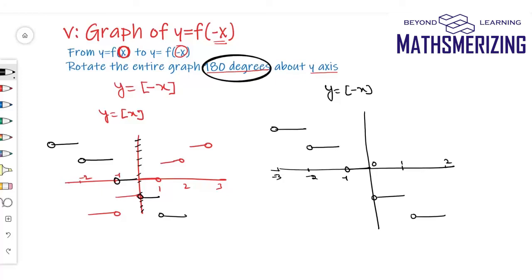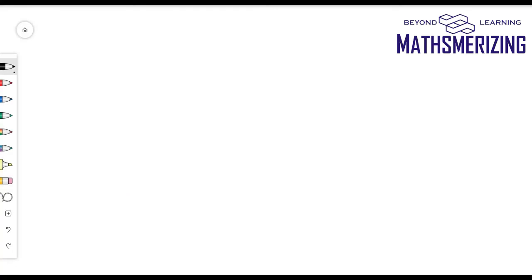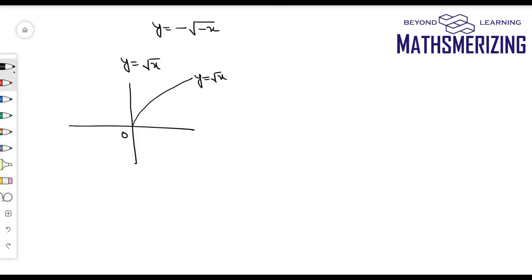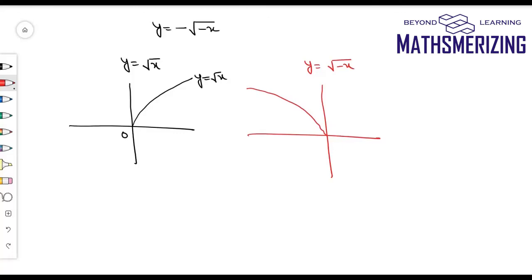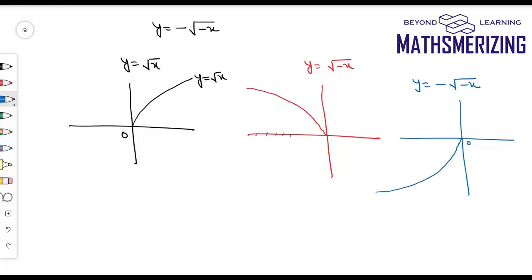I can rotate the entire graph 180 degrees about the y-axis, or place a two-way mirror on the y-axis and reflect the entire graph. For example, to draw y equals −√(−x), the basic graph is y equals √x. First draw y equals √(−x) by placing a mirror on the y-axis and reflecting right to left. Then for y equals −√(−x), place a mirror on the x-axis and reflect down to up. That's the graph of y equals −√(−x).